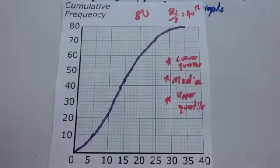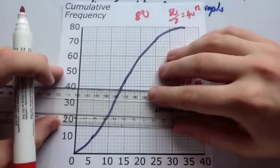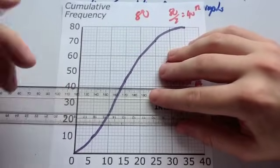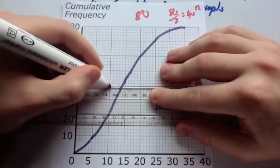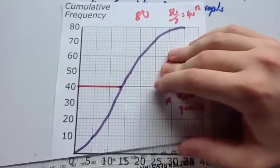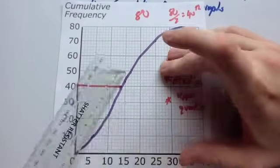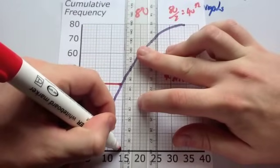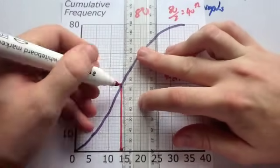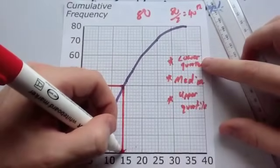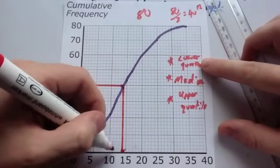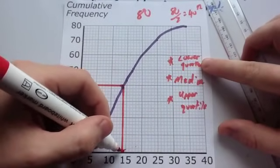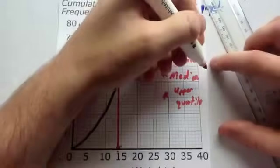So the 40th person will be here. So you're going to get your ruler, and you're going to go from 40 across, and then down. And I've found that the median here is this point, which is 10, 15, 11, 12, 13, 14. So the median is 14.